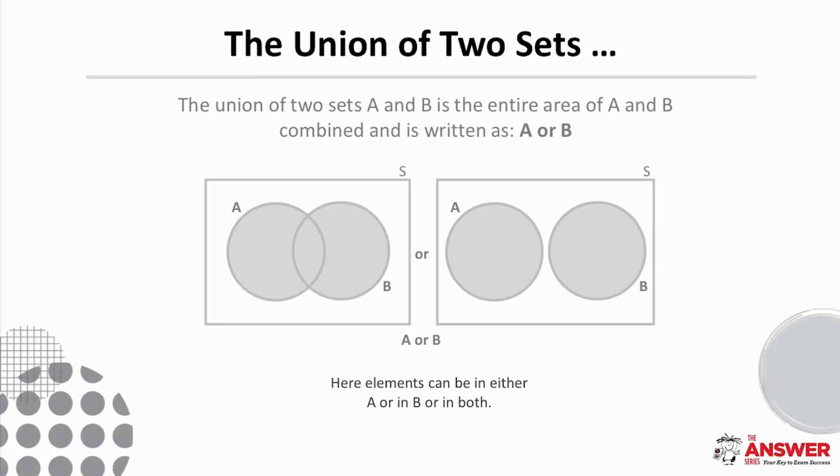There are two representations of Venn diagrams from the beginning of the video that I'd like to give a bit more focus. The first is the union of two sets. This refers to the entire area of A and B combined and we write this as A or B or we can use the notation A union B.